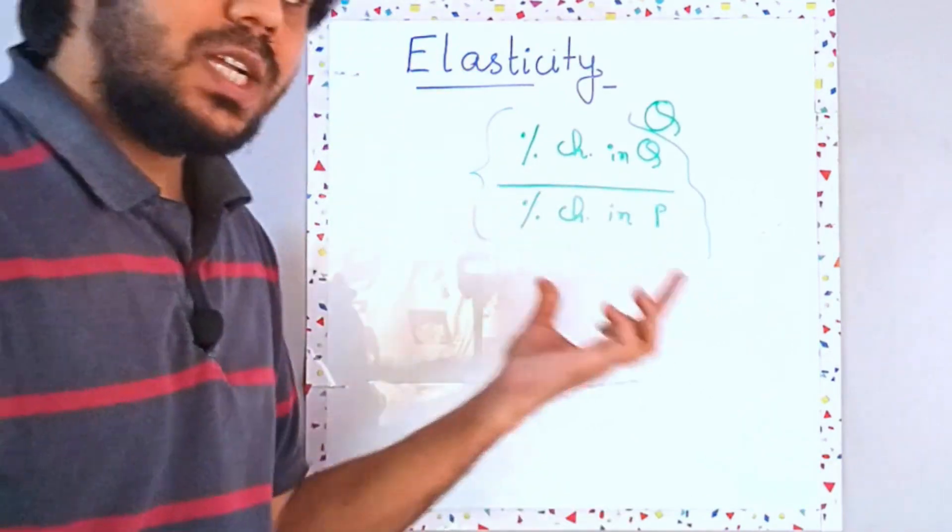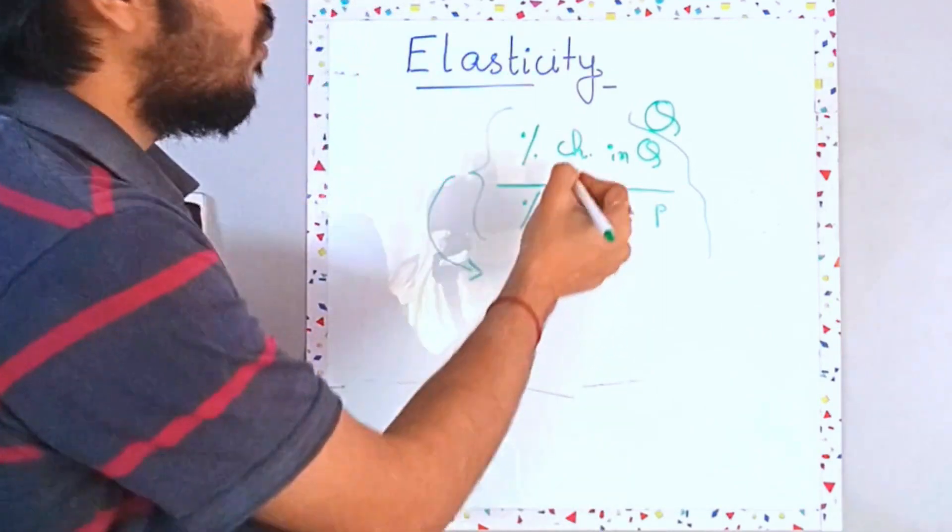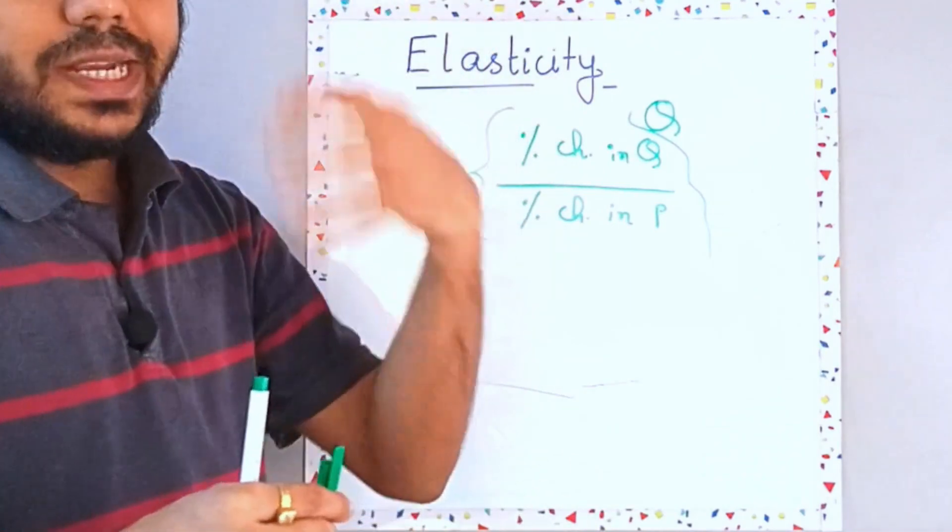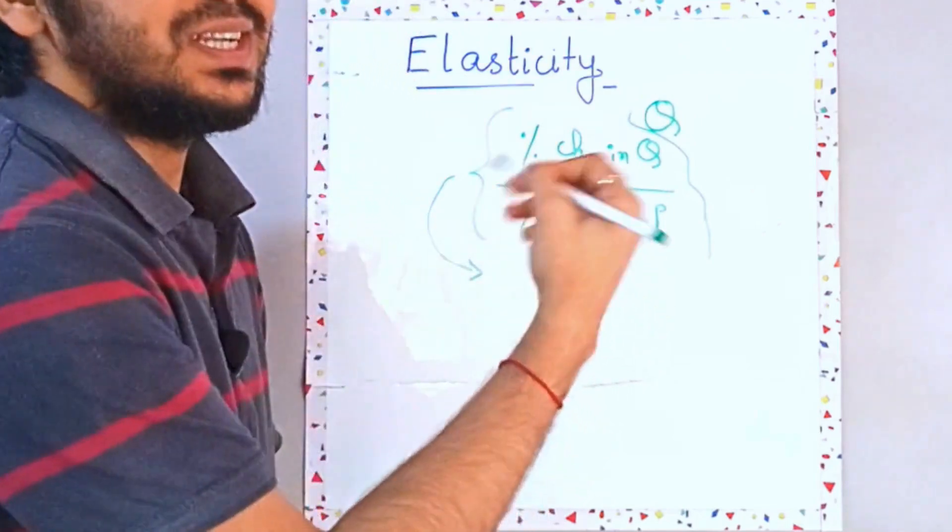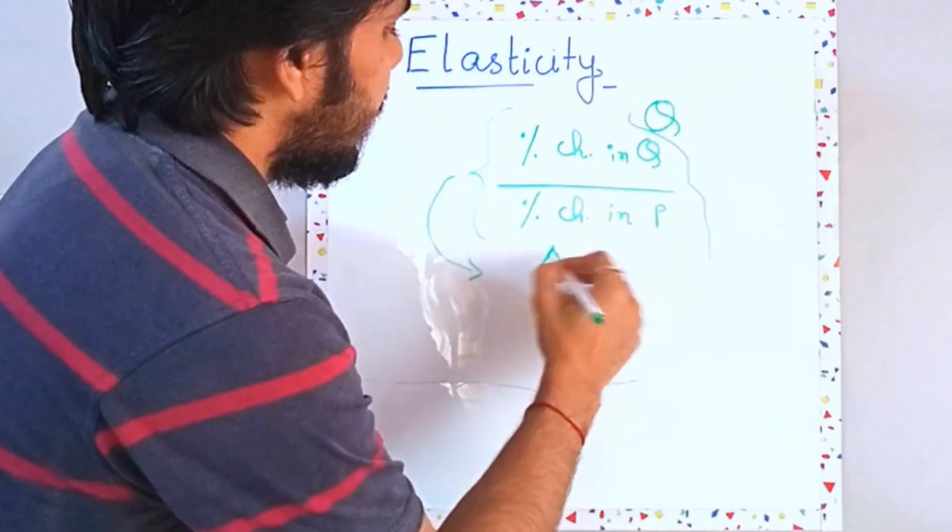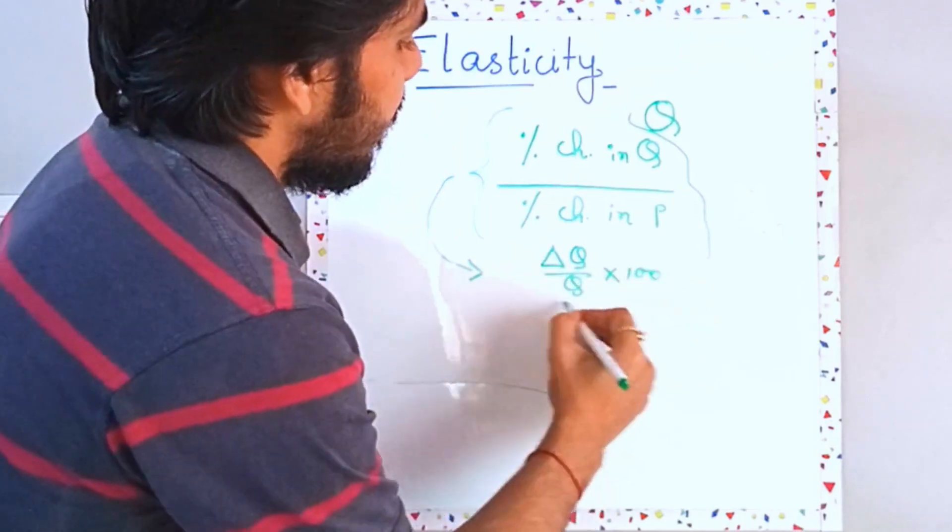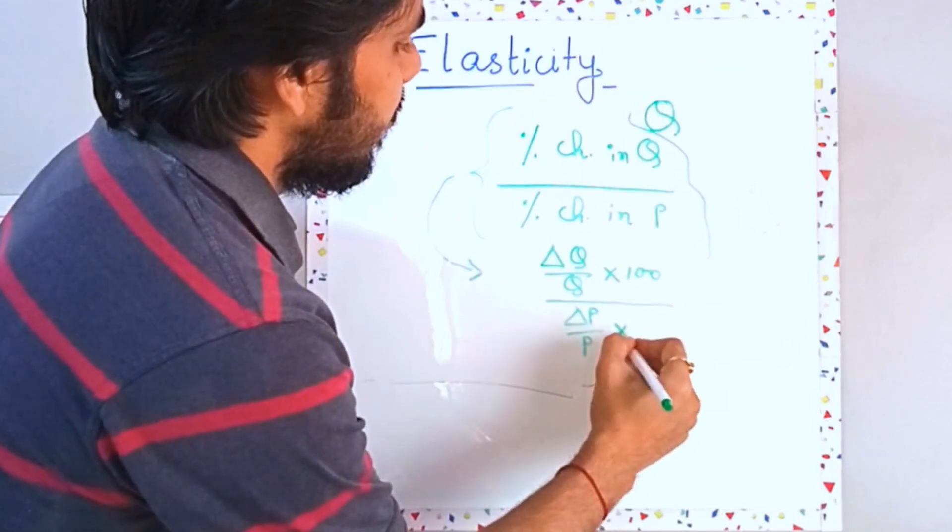Now there's another way to denote this, that is just write the formula for percentage change which is change upon original into hundred. So this will be your change which is delta. So delta of Q upon Q into hundred divided by delta of P upon P into hundred.